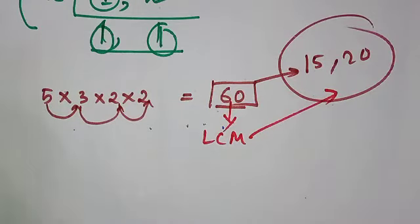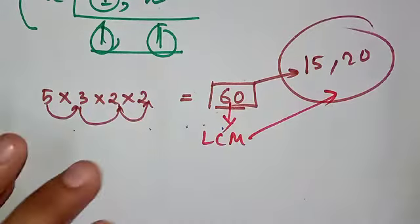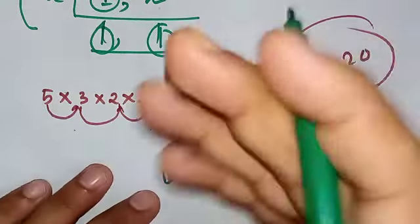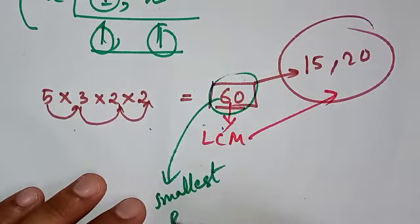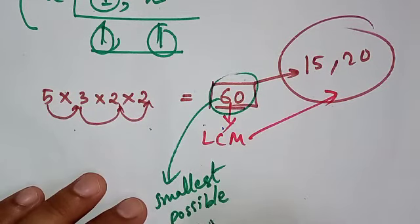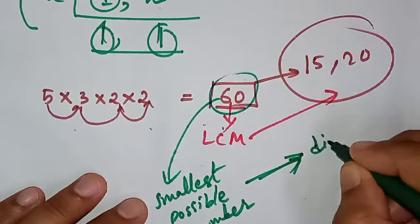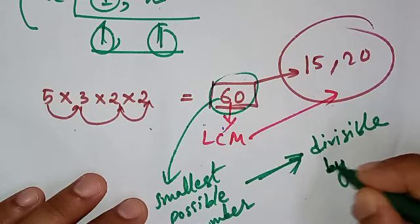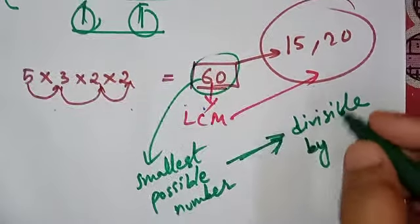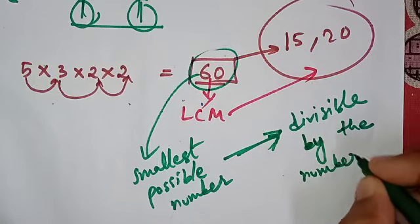So my dear students, actually LCM is the smallest number. Yes, LCM of two numbers or more than two numbers is the smallest possible number that is divisible by the numbers itself.